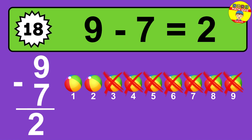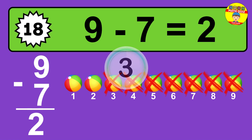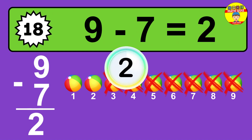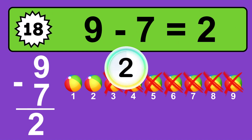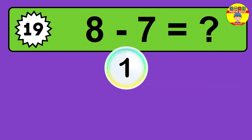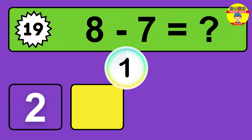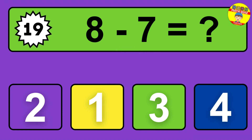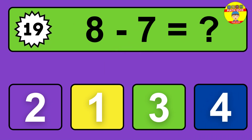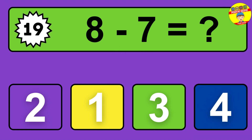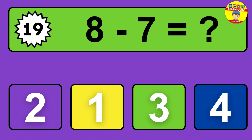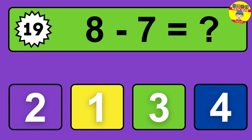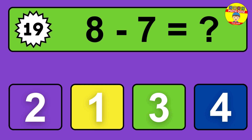Question twenty: four minus one equals what? So the answer is four minus one is three. Let's count it — one, two, three.